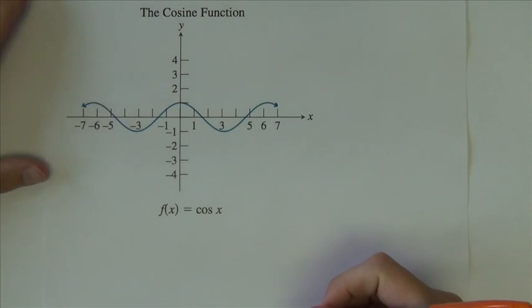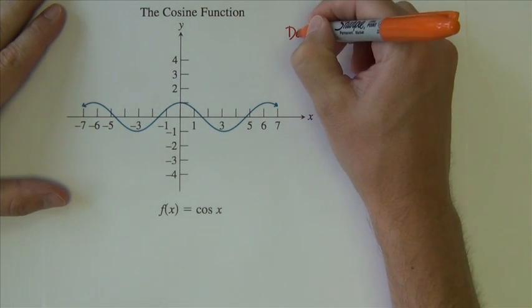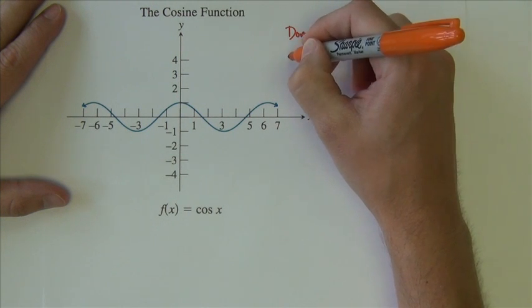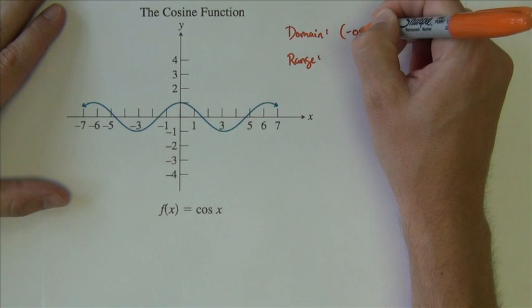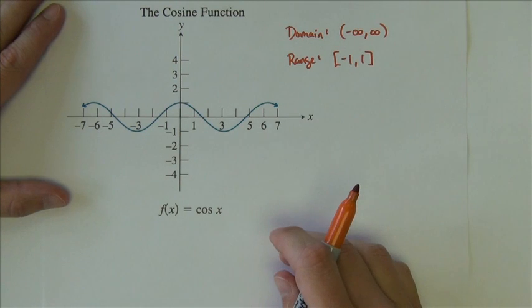Next function we want to look at is the cosine function and its graph. Domain and range for it are the same as what they were for the sine function. So no different there, negative infinity to positive infinity, and negative one to one.